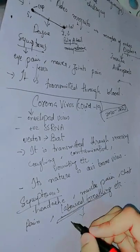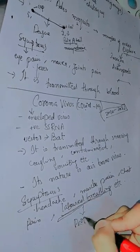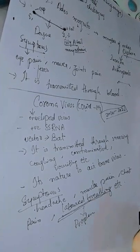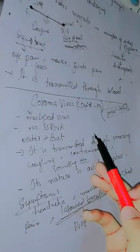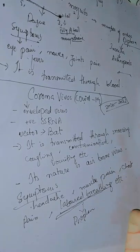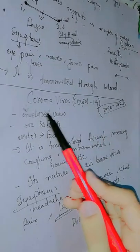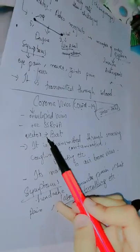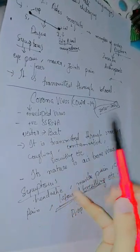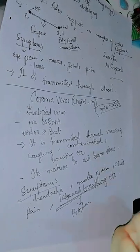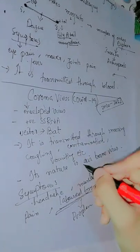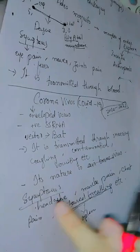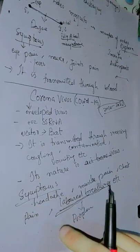So that was all about coronavirus, COVID-19. It is an enveloped virus with positive single-stranded RNA. Its vector is bat, and it is transmitted through sneezing, coughing, vomiting, and contamination. Its nature is an airborne virus, and the symptoms are headache, muscle pain, and chest pain.